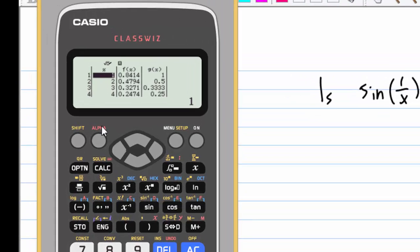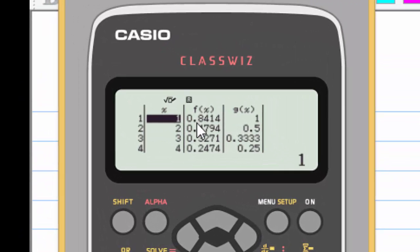You can find that sin(1/x), which is on the first table of f(x), and 1/x is a table for g(x). By looking at the comparison, you know that sin(1/x) ≤ 1/x for this value.